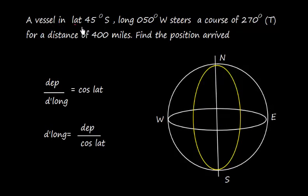A vessel in latitude 45 degrees south, longitude 050 degrees west, steers a course of 270 degrees true for a distance of 400 miles. Find the position arrived. So let us mark here: the vessel is in the southern hemisphere. This is north, this is south, so the vessel is somewhere here at 45 degrees and 050 degrees west.